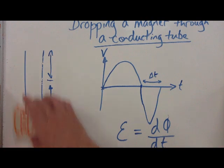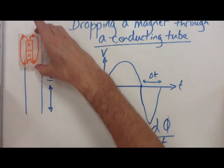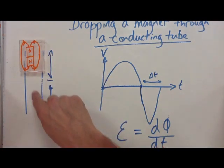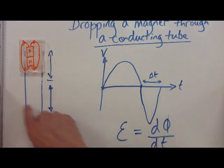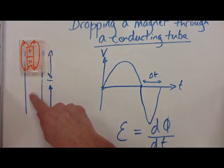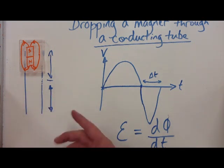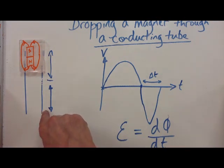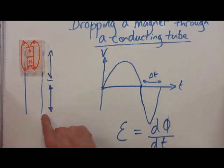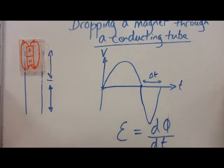As this drops through, we know it induces an EMF in this tube. And because this tube is made of copper, there will be a current inside it. That current will generate its own magnetic field, and the magnetic field generated within this tube will directly oppose the magnetic field that is making it. That's Lenz's Law, and that's the addition of the negative sign.